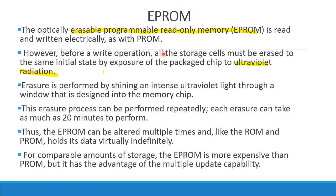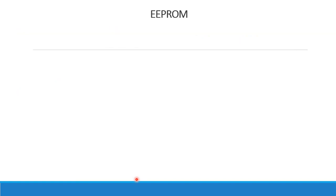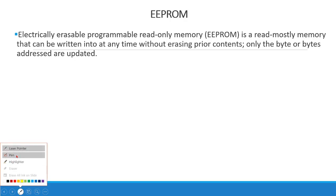With EPROM, electrical read and write are possible. But before writing, you need to erase using UV light — it is a chip-level erase, meaning the entire chip is exposed to ultraviolet radiation. Once the data is erased, you can choose the data and write it. The UV light is used to erase, and erasure takes about 20 minutes. This is expensive, but it has the advantage of multiple update capability.